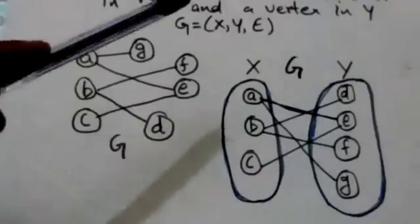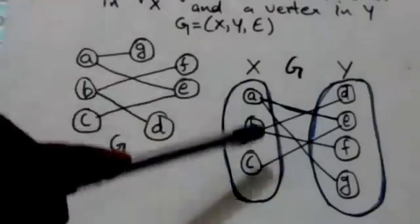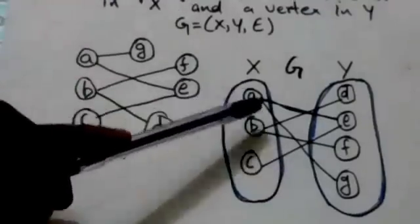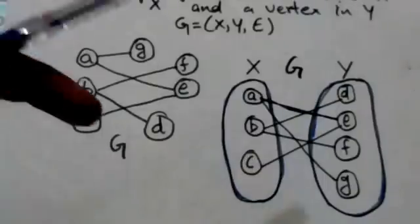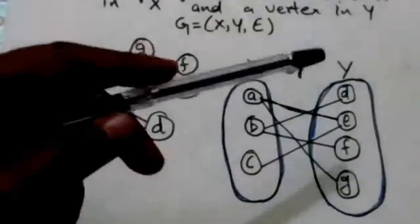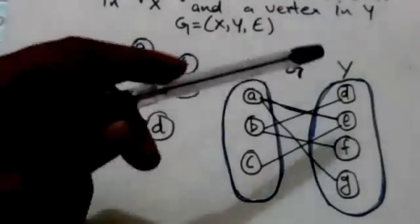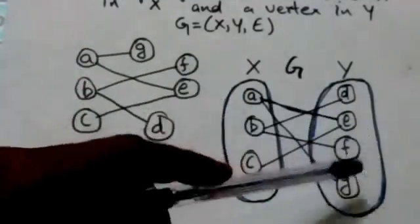There are three vertices in set X, that is a, b, and c. And there are four vertices in set Y, that is d, e, f, g.